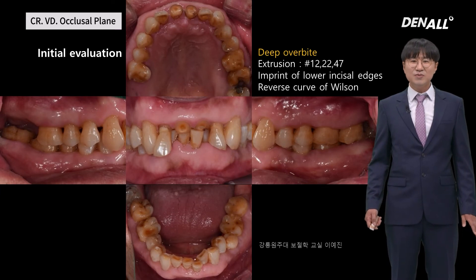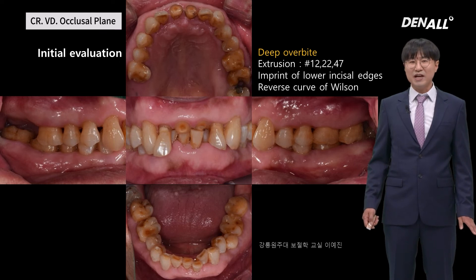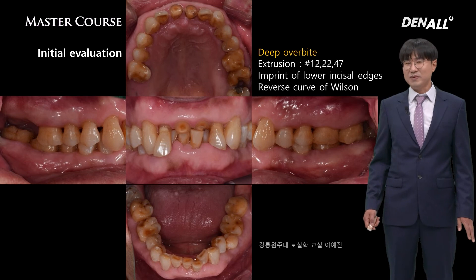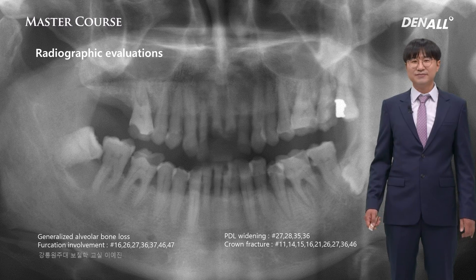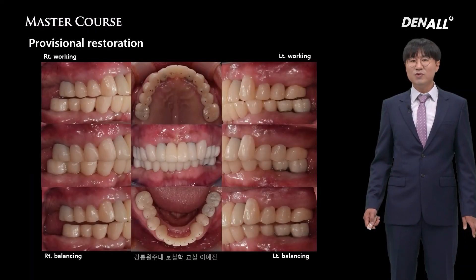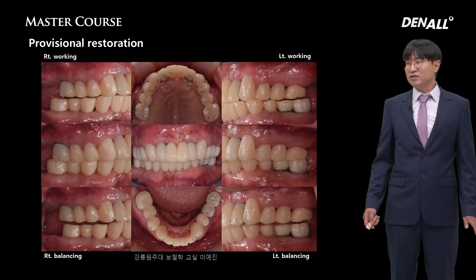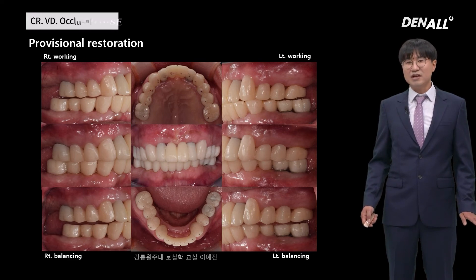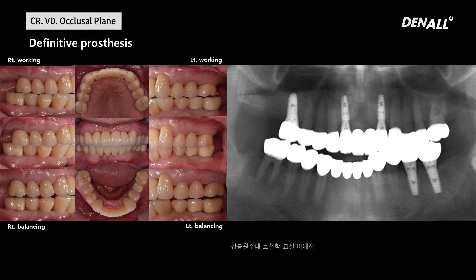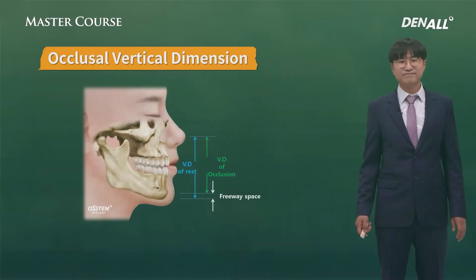This case is courtesy of Professor Ye Jin Lee of Gangneung-Wonju University Prosthodontics Department. With VD loss and insufficient space for restorations, it looks very challenging with aesthetic requirements, generalized alveolar bone loss, and crown fractures. Provisional restoration was used to evaluate the patient's adaptation to the increased VD and satisfaction with function. Definitive prosthesis was completed aesthetically and functionally. Compared to the initial photo, a lot of improvements have been made. In this case, it is not possible to restore without raising VD.